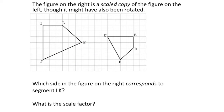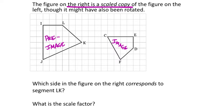Here's another one, but we see on the right that the figure has been rotated. No problem — it is important to see that on the left that is our pre-image, and on the right is our image. How do we know? Because it says the one on the right is the scaled copy. The pre-image is the figure that we started with.